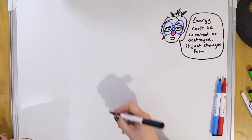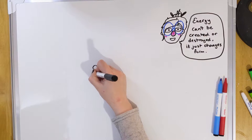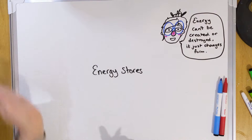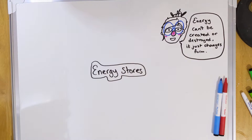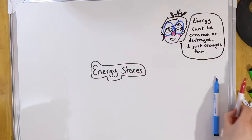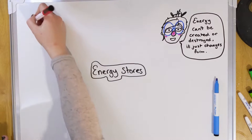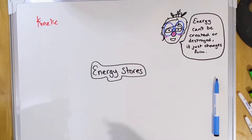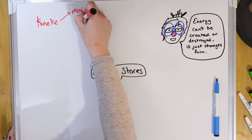To start off, we're going to make a mind map with energy stores in the middle, and then for each energy store we're going to draw a little branch. Our first energy store is something called kinetic energy. You might already associate kinetic with moving, because kinetic energy is to do with movement. So for example, when you kick a ball or fire an amazing serve in tennis, you are using the kinetic store to make that object move.